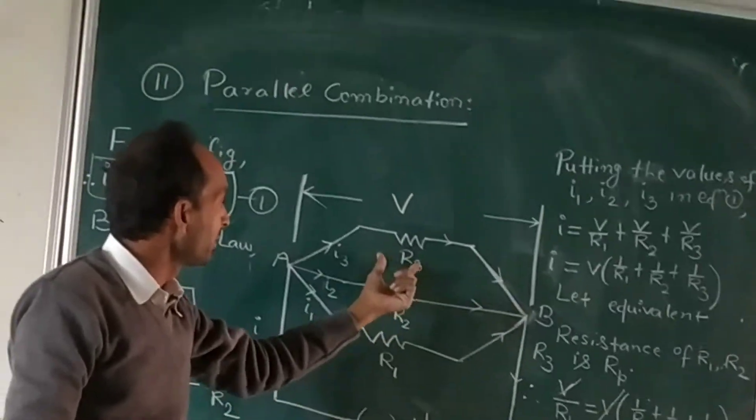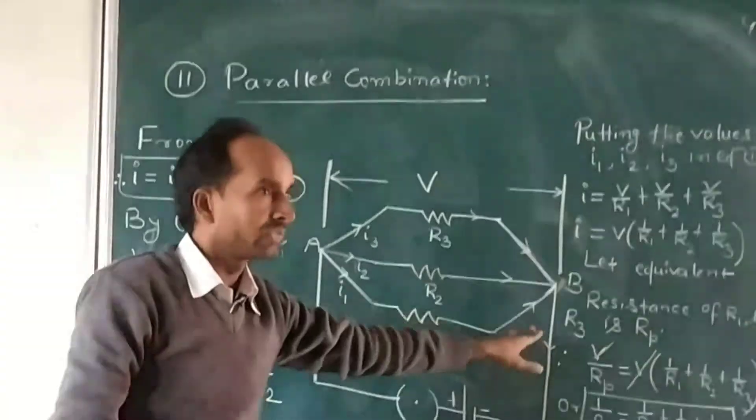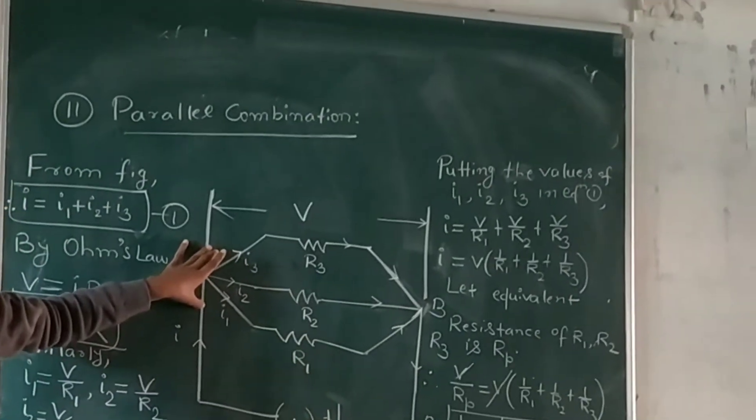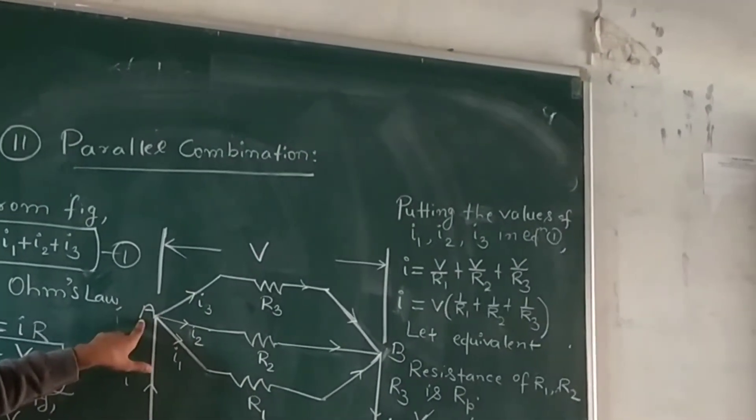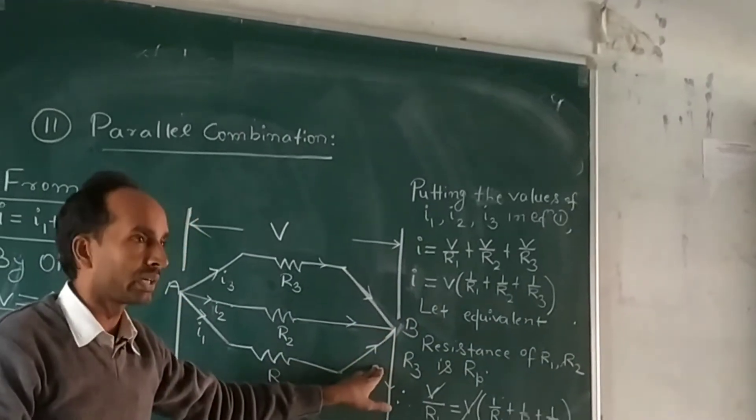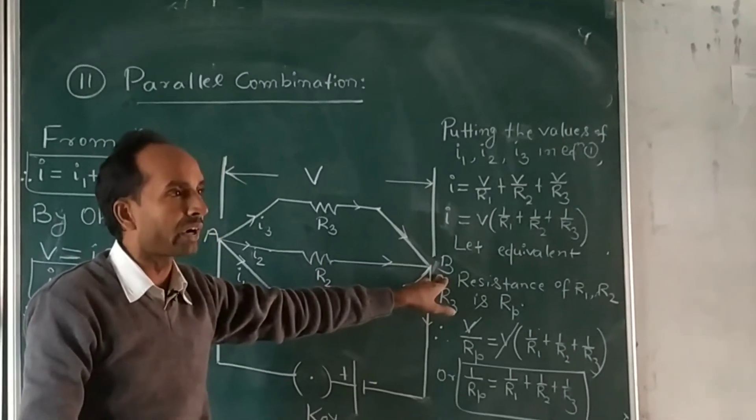Resistances are connected between only two points. The first end of all resistors are connected to the common point A, and the second terminal of all resistances are connected to the point B.